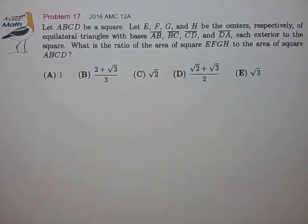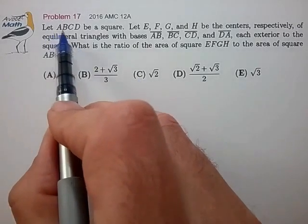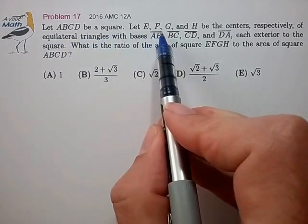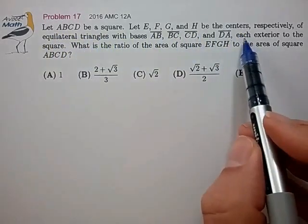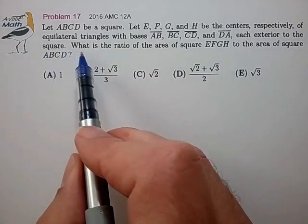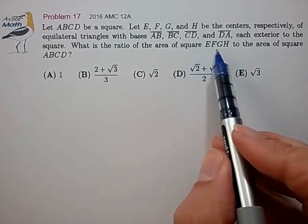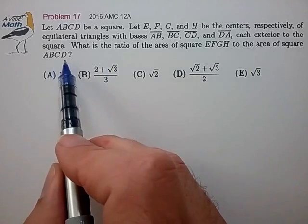Hi, this is problem 17 from AMC 12A. Let ABCD be a square and let EFGH be the centers of the equilateral triangles each exterior to the square. What is the ratio of the area of square EFGH to the area of square ABCD?